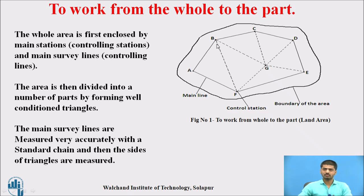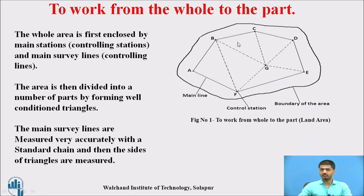Further, the area is divided into a number of parts by forming well-conditioned triangles. If you join line BF, one triangle is present, then a second, third, fourth — a number of triangles are present. The main survey lines are measured very accurately by using a standard chain, engineering chain, metric chain, Gunter chain, or tapes. Then the sides of the triangles are measured — A to B, B to C, C to D — so the periphery of these particular control stations is measured first, and then you move towards the remaining parts, that is the sides of the triangles.